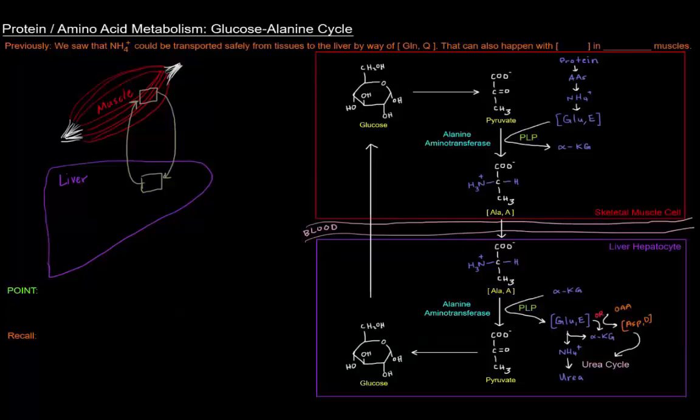Previously we saw that ammonium ion can be transported safely from tissues to the liver by way of glutamine, the main amino acid that carries nitrogen through the blood and around the body. Now that doesn't have to happen exclusively with glutamine. It can also occur with another amino acid, alanine.